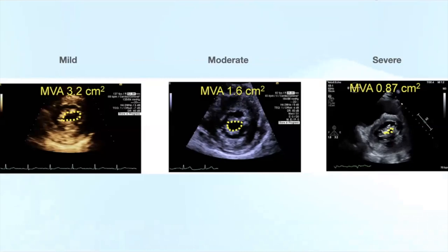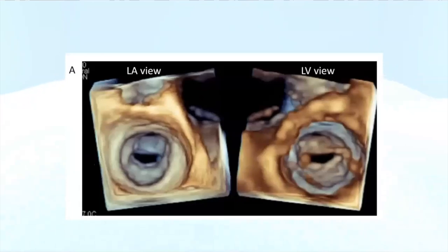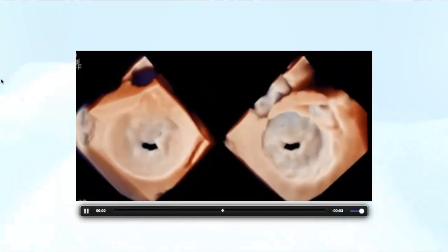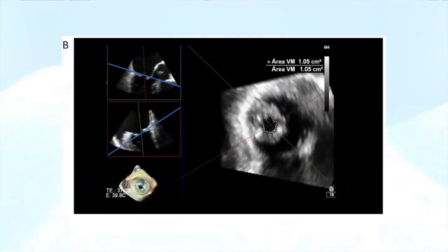Planimetry echoes show different valve areas for mild, moderate, and severe mitral stenosis: valve areas of 3.2, 1.6, and 0.87 centimeters squared, respectively. 3D echo provides the advantage of assessing the valve from both the atrial side and the ventricular side, and it also helps with valves that have an eccentrically oriented orifice where true planimetry is difficult on 2D echo but achievable with 3D.